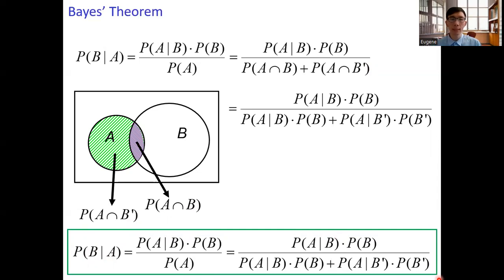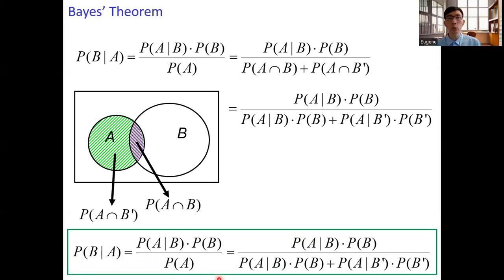From the Bayes' formula, we can see that there is a relationship between the two conditional probabilities: the probability of B given A and the probability of A given B. Sometimes we may not know one of these conditional probabilities, or one may be difficult to compute. In that case, we can make use of Bayes' theorem to work out either of these two conditional probabilities, given that we know the marginal probabilities P(A) and P(B) respectively.